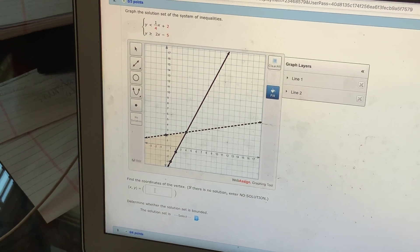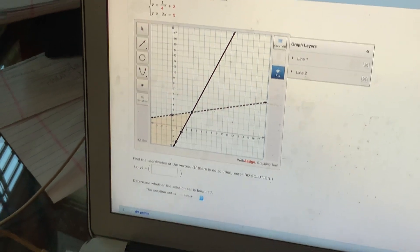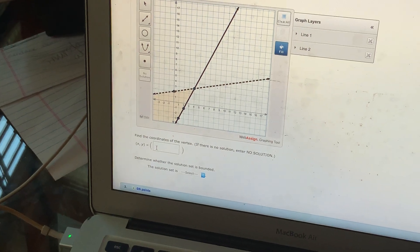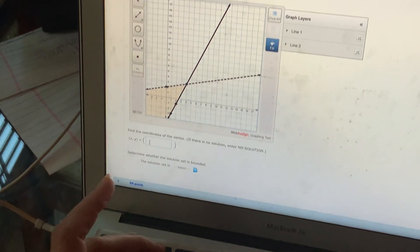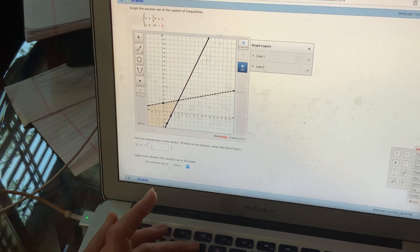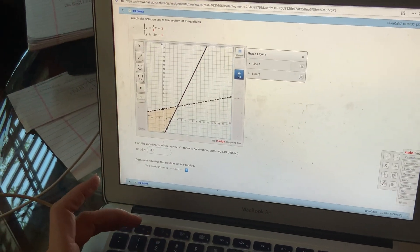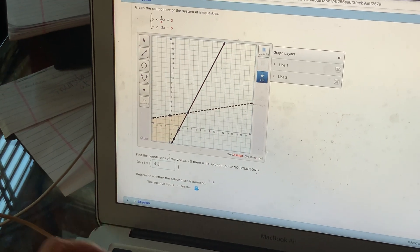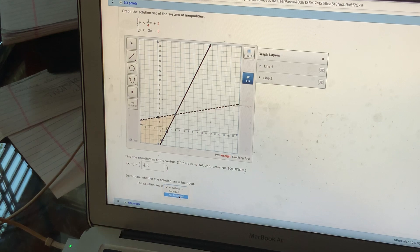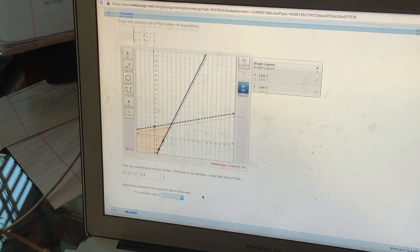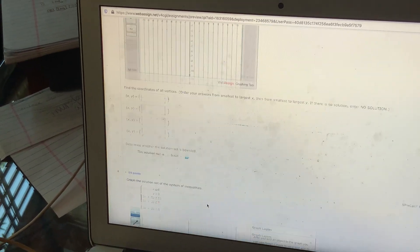All right. And then I'm just going to go ahead and answer the other two questions since I've already worked the problem. I know that my x coordinate for my vertex was 4. My y coordinate was 3. I've already found that. And I already knew that my region was not bounded. So that's all I'm going to do, and then I'm going to submit this.